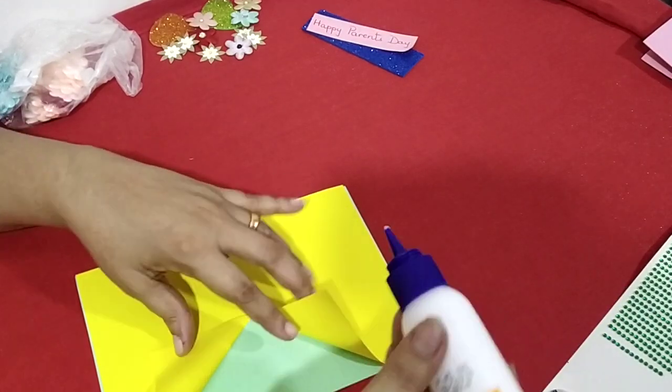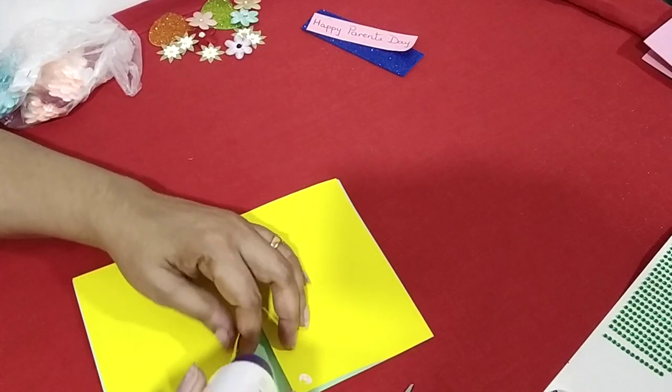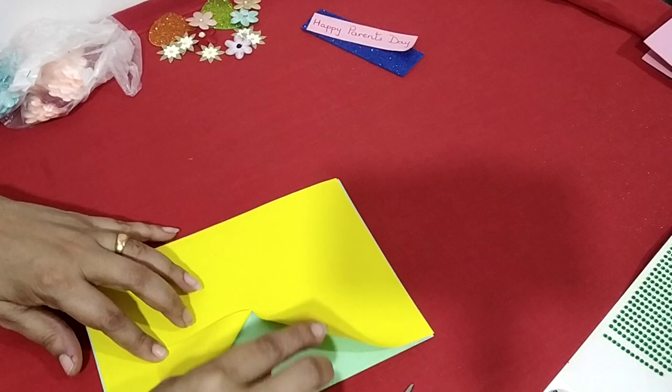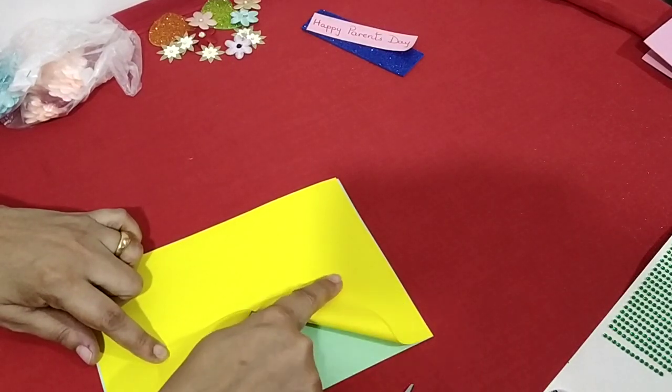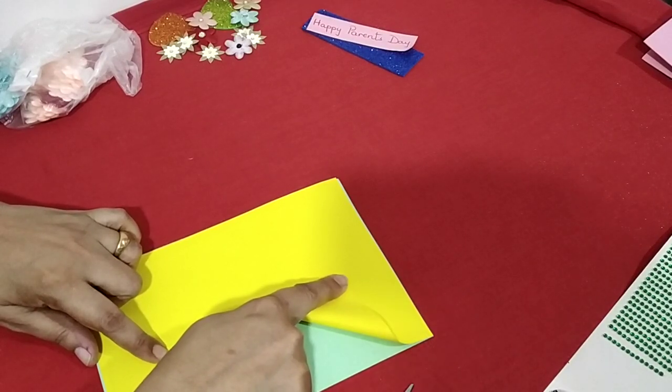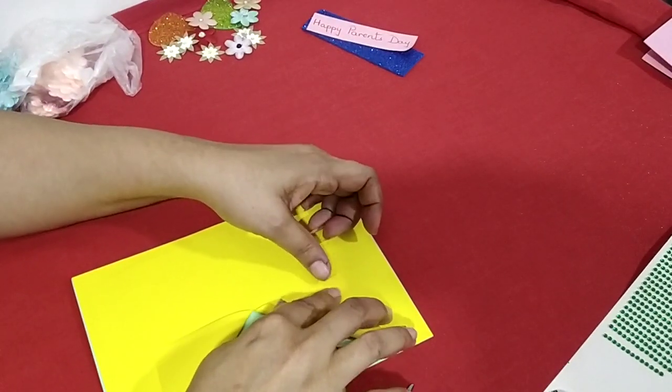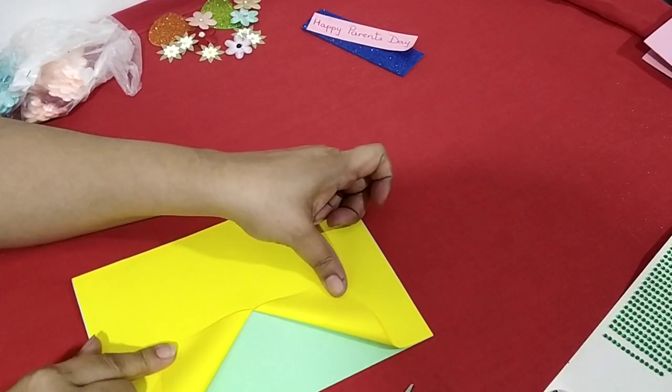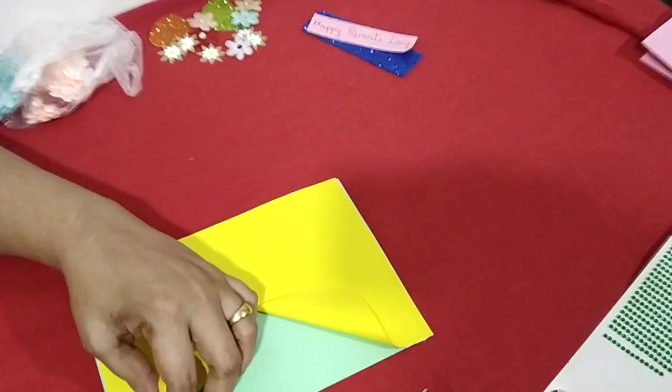So first you take your glue, place it a little bit here and a little bit here and just hold it for some time till it dries. Once it is stuck, then you can place the glue a little bit here and here.